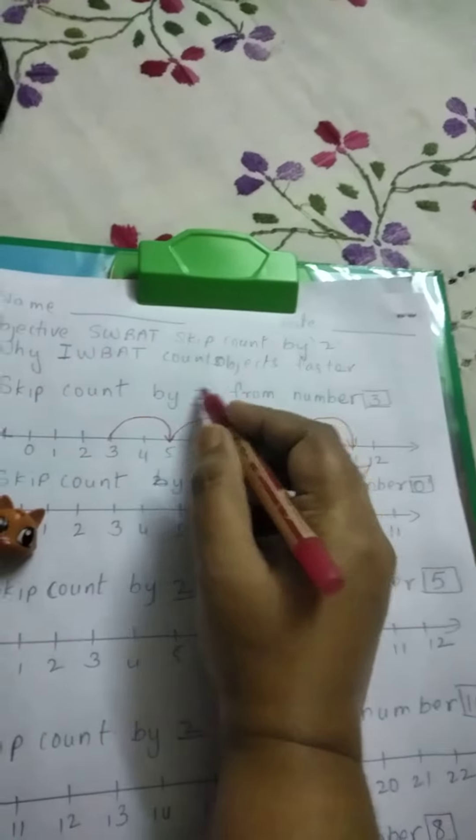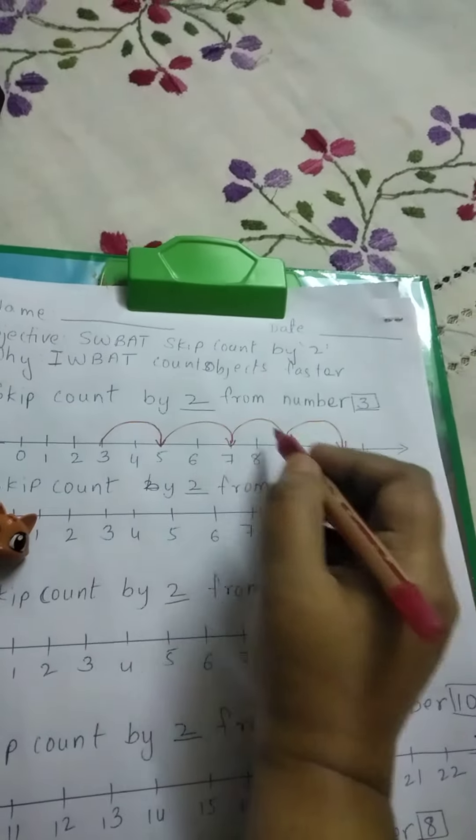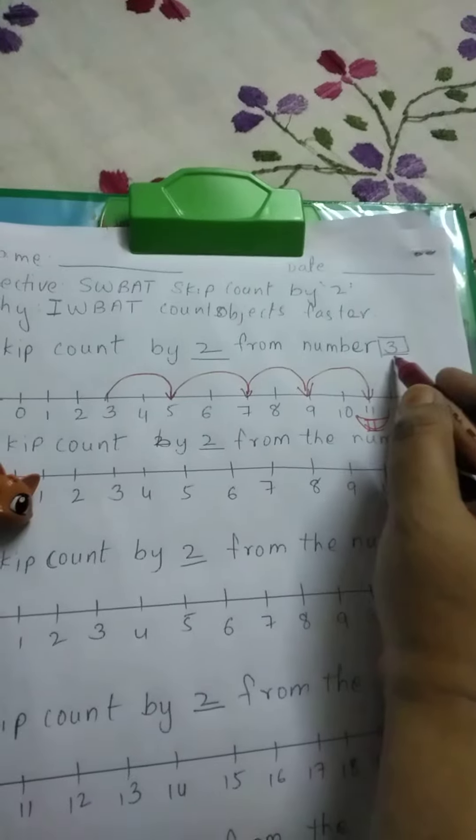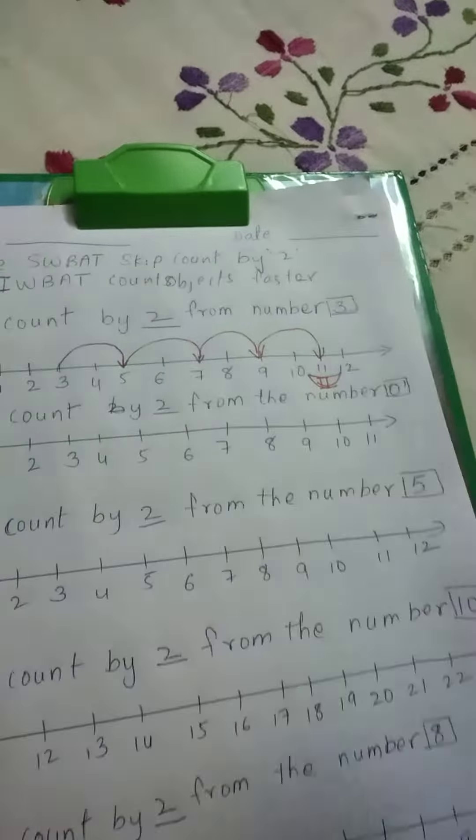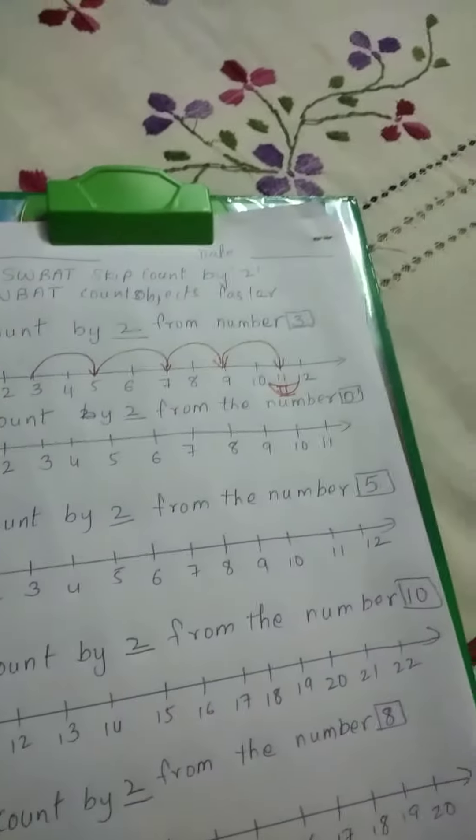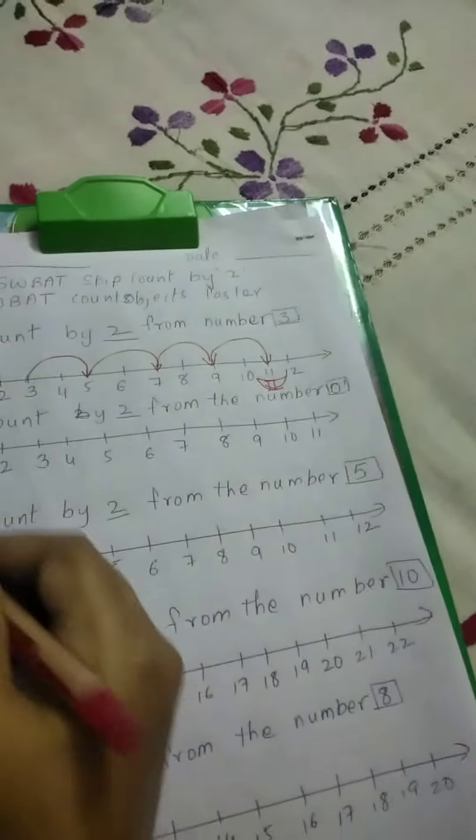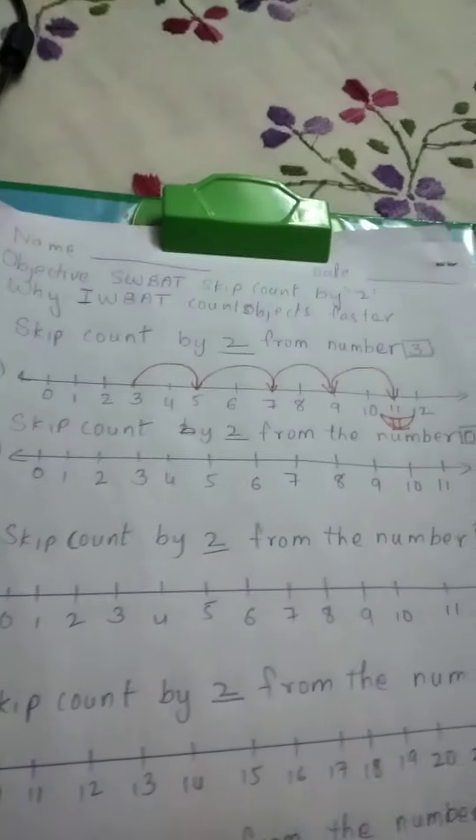Whatever number is given here, we will start from that number to skip count. So there are 5 different problems here with different starting numbers for skip counting.